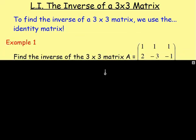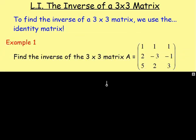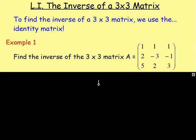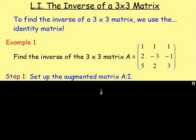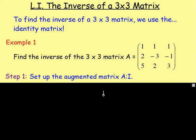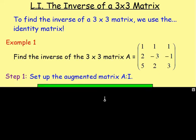So, here we go with a worked example. Example 1: find the inverse of the 3x3 matrix A, which has the entries 1, 1, 1, 2, negative 3, negative 1 and 5, 2, 3. The way this works — step 1 — you want to set up the augmented matrix: matrix A and then matrix I. As we all know, I is your identity matrix. So, we have matrix A and beside it the identity matrix. We have the top row, which we call row 1, the middle row, which we call row 2, and the bottom row, which we call row 3.